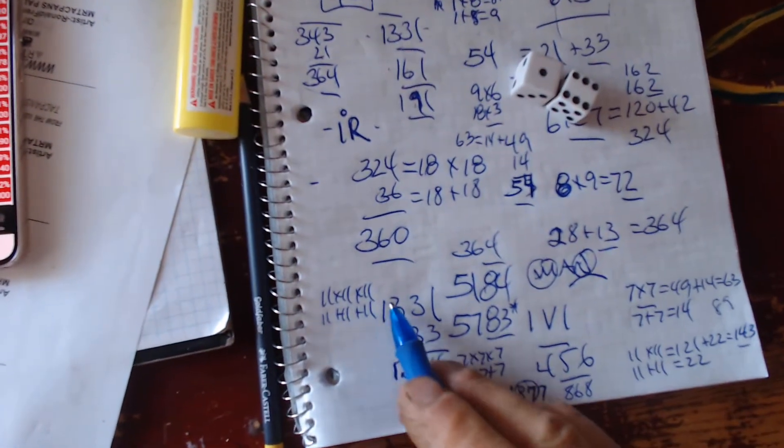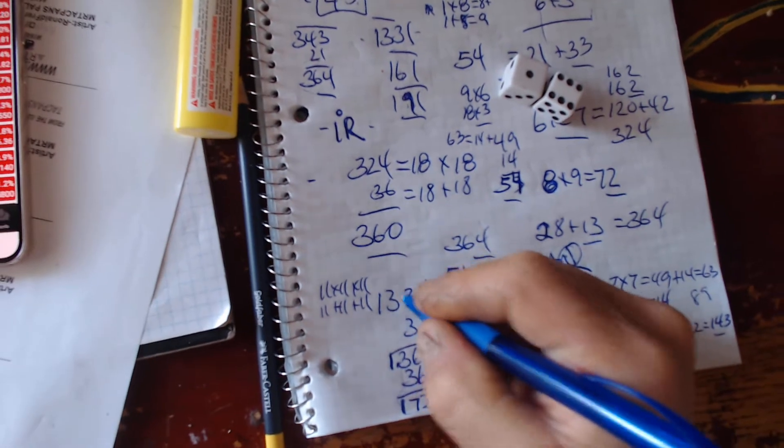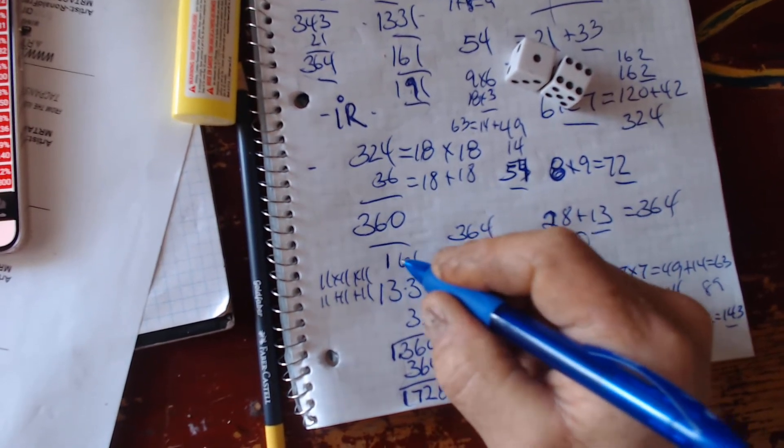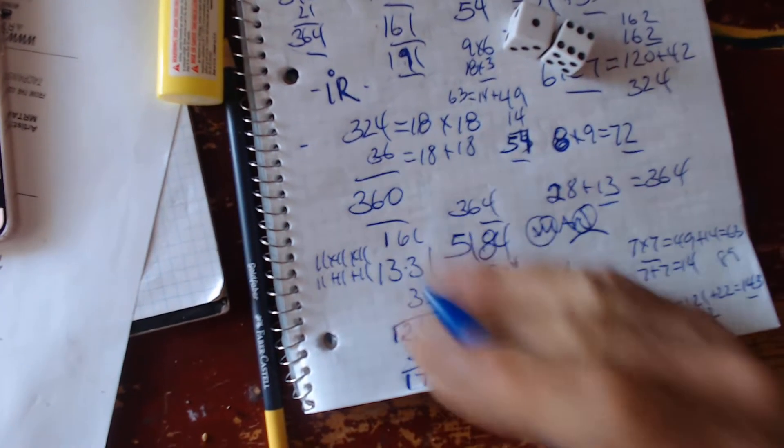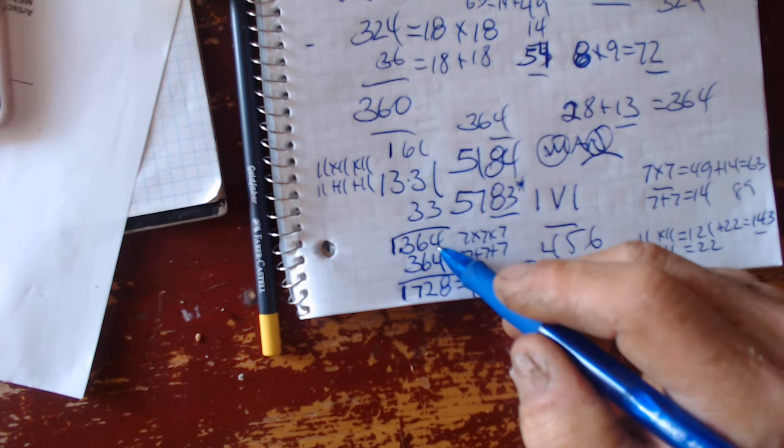So when you come down to eleven times eleven times eleven, it equals thirteen thirty-one. The inside rotation of this number will create one, six, one. And then it goes on. When you add up eleven, eleven, eleven, it's thirty-three, three, sixty-four.